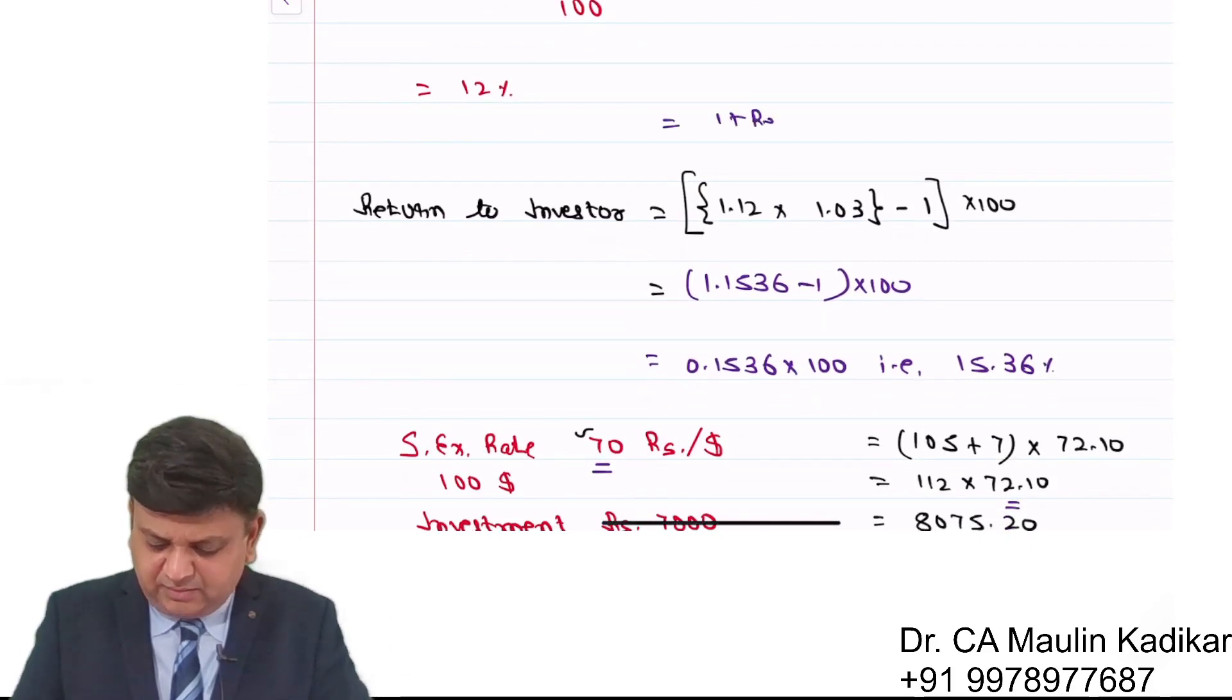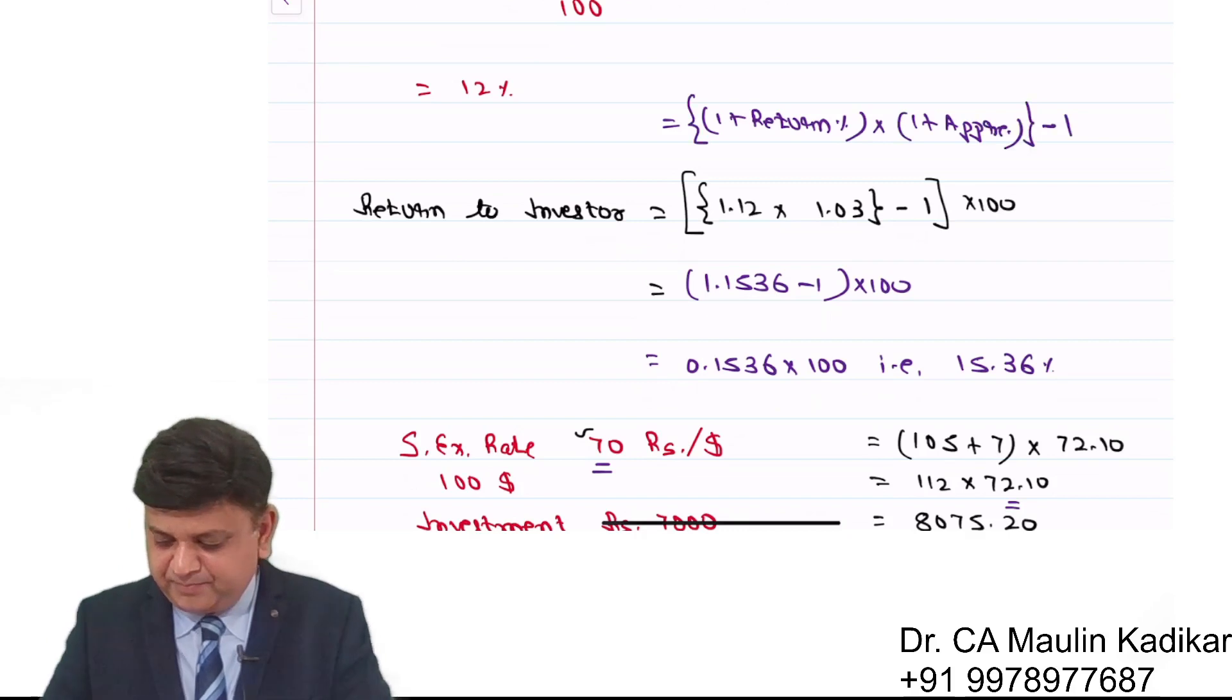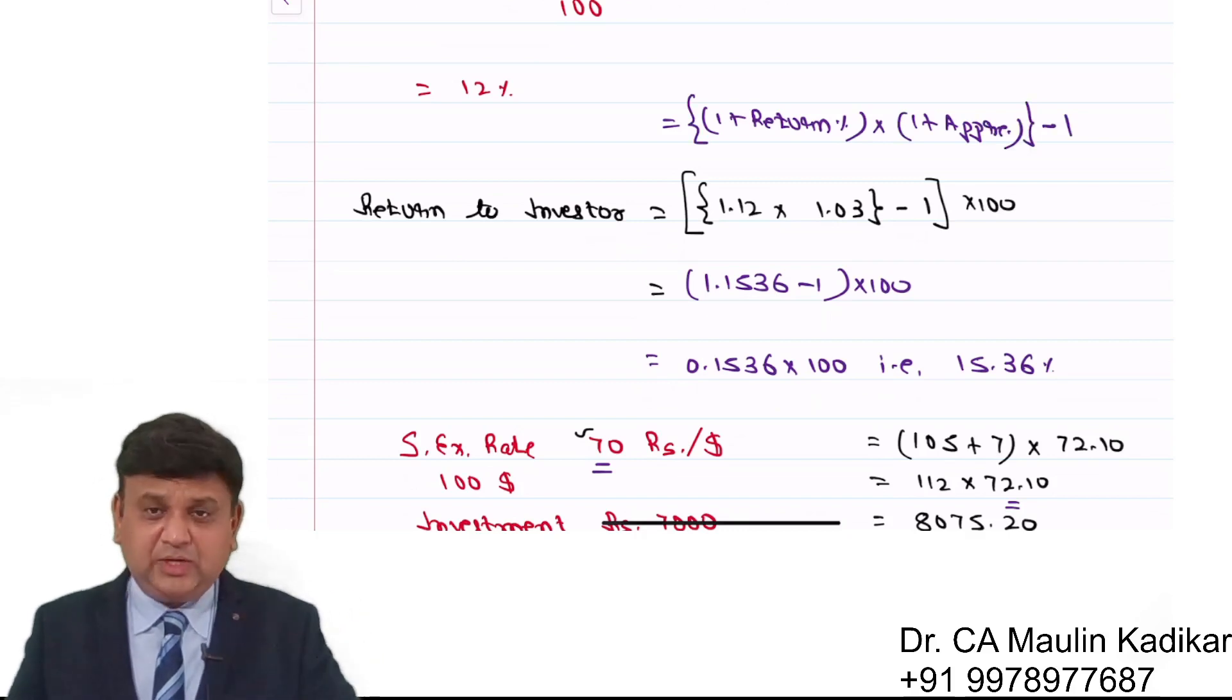1 plus return in percentage term into 1 plus appreciation. If there's depreciation, then deduct. Whatever answer comes, deduct 1 from it and multiply by 100 in order to get the answer in percentage term to the investor.